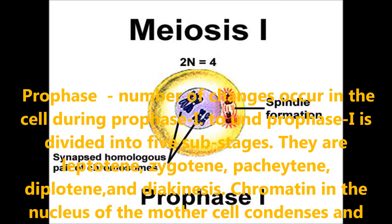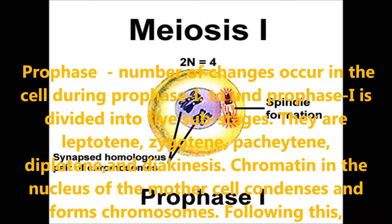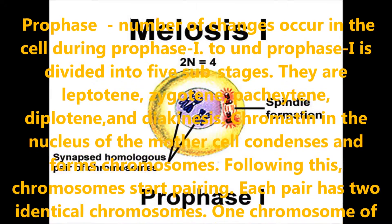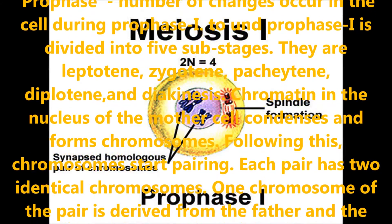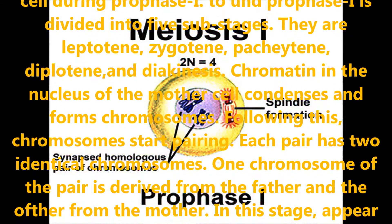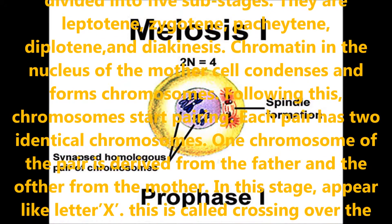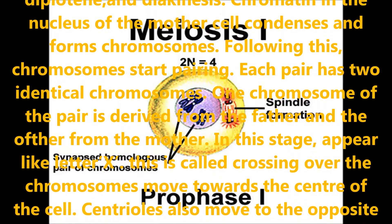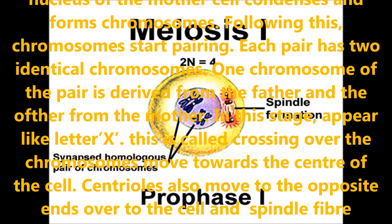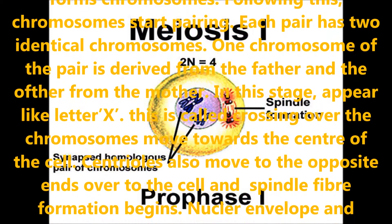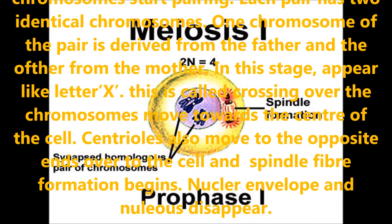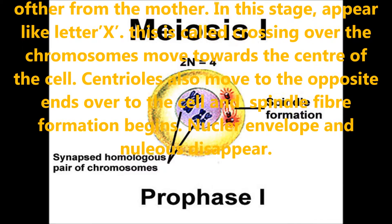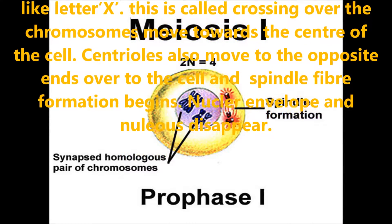The five sub-stages of prophase 1 are leptotene, zygotene, pachytene, diplotene, and diakinesis. During this stage, chromatin in the nucleus of the mother cell condenses and forms chromosomes. Chromosomes then start pairing — each pair has two identical chromosomes, one derived from the father and the other from the mother. At this stage, chromosomes appear like the letter X, and this is called crossing over. The chromosomes then move towards the center of the cell.